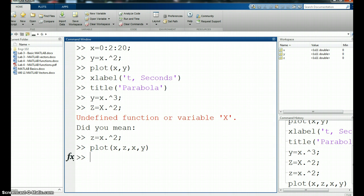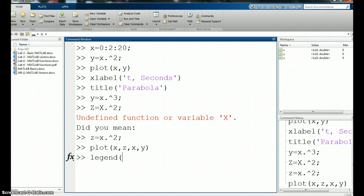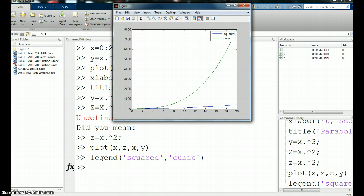If I wanted to put a legend, I could do so. And I just put in whatever strings I need for that legend. Just put in what you want to call it. Let's see, z, I believe, was the parabola. So let's say squared. That's the squared function. And the second one was y, which was the cubic. I'm going to say, okay, add that legend to the graph. And you can see we have a legend.